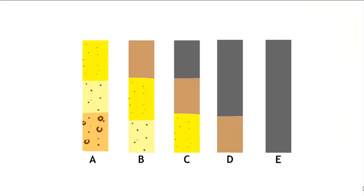Location B doesn't show the gravel, it just shows coarse sand, overlain by fine sand, overlain by silt. Location C shows fine sand, silt, and then clay.